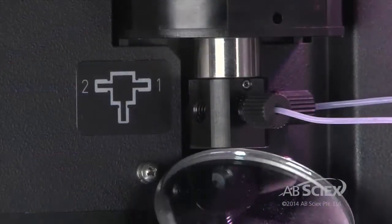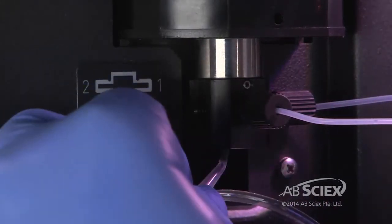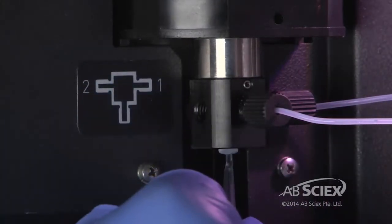Inside the syringe valve, use a plastic pipette tip to carefully remove the white Teflon seal. Be careful not to damage the syringe valve.